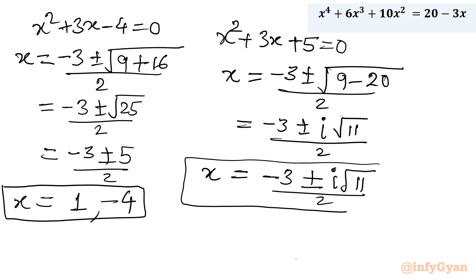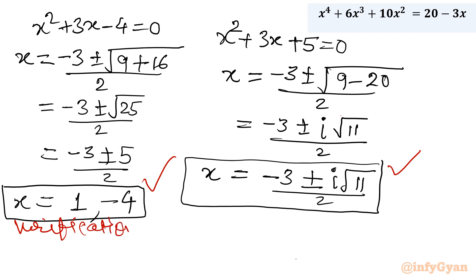If you want to verify the values, we can verify. So there are 4 solutions in total: 2 are real (x = 1 and x = −4) and 2 are imaginary. Let us verify x = 1; you can verify x = −4 on your own. The complex solutions we won't verify.